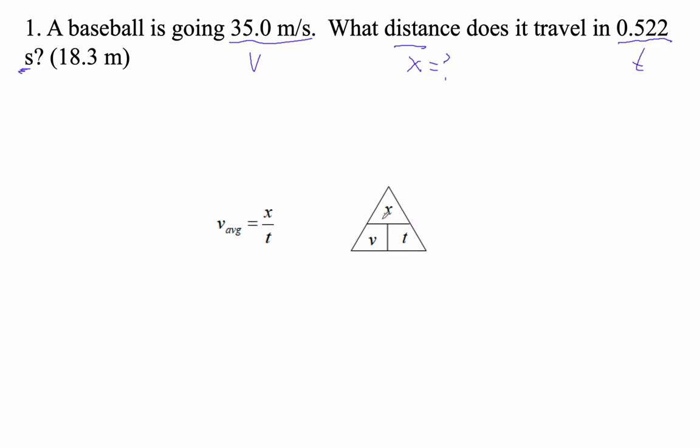So remember that these are just triangle problems here. So we're looking for x. Well, x is going to be v times t, right? So x is vt.